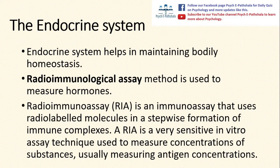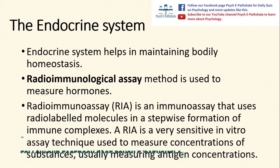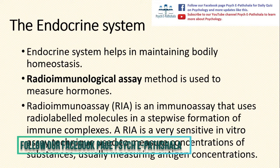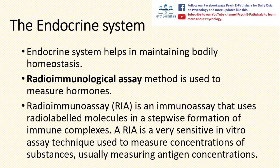To measure the hormones in our body, the method that is used is called radio immunological assay. Radio immunological assay, or RIA, is an immunoassay that uses radio-labeled molecules in a stepwise formation of immune complexes. An RIA is a very sensitive in vitro assay technique used to measure concentration of substances, usually measuring antigen concentrations.